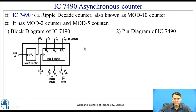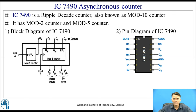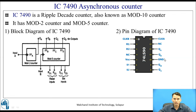Let us see the pin diagram of IC7490. It is a 14-pin IC. Pin 14 is clock A, the clock input to the first flip-flop. Pin 1 is clock B, the clock input to the mod-5 counter. Pins 2 and 3 are reset inputs. Pin 4 is not connected. Pin 5 is VCC. Pins 6 and 7 are set inputs. Pin 10 is ground. Pin 13 is not connected. The outputs are at pins 12, 11, 9, and 8, corresponding to QA, QD, QB, and QC. The output from MSB to LSB is ordered QD, QC, QB, QA.